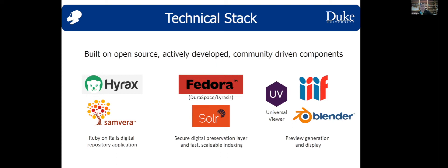There are different components: the front end is a Hyrax repository underlain by a secure digital preservation layer, using Solr for fast and scalable indexing. Another important part is our metadata approach to discoverability — creating previews of the data using open components like the Universal Viewer, image-sharing protocols according to IIIF, and derivative and characterization protocols through Blender.